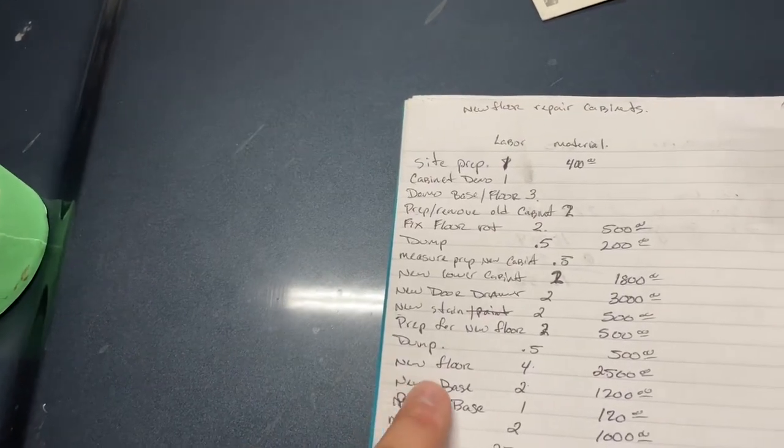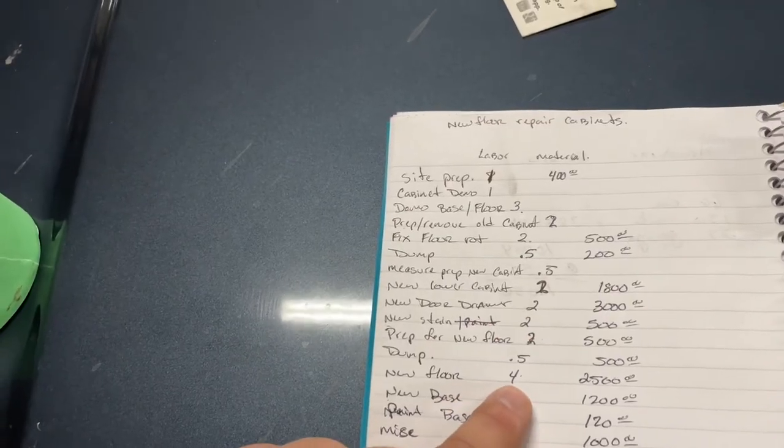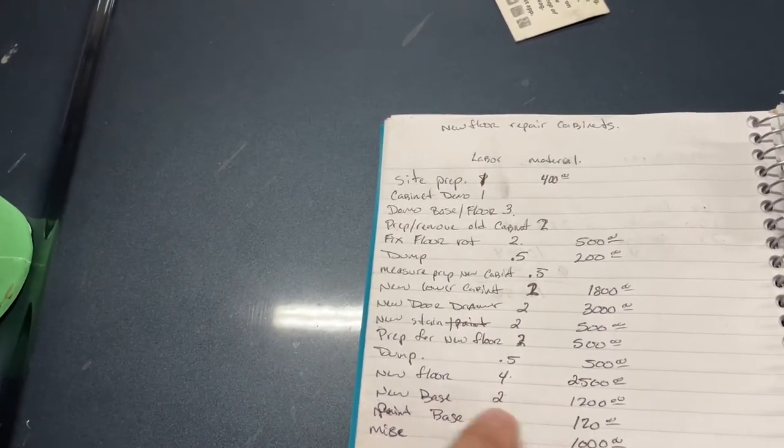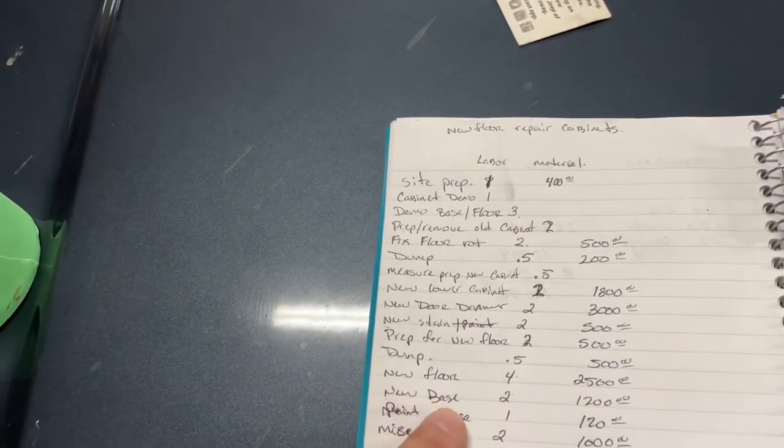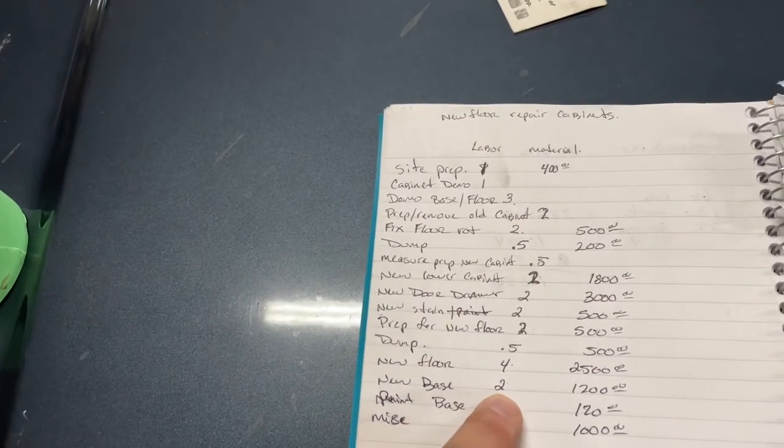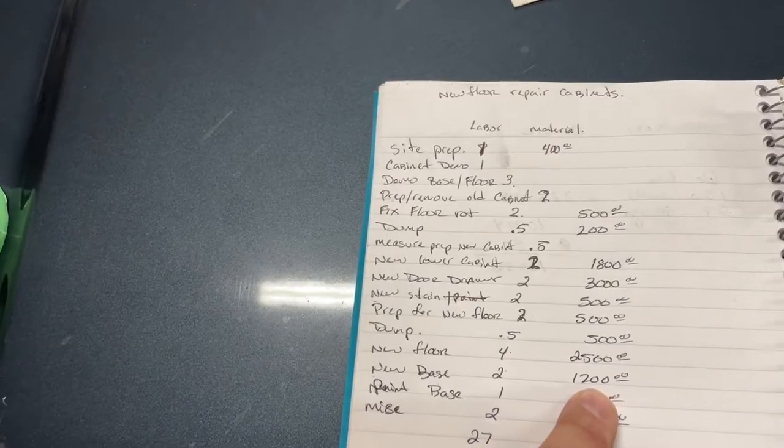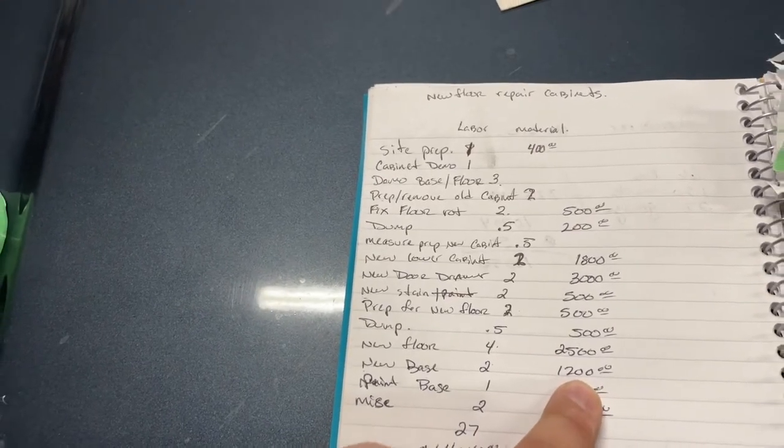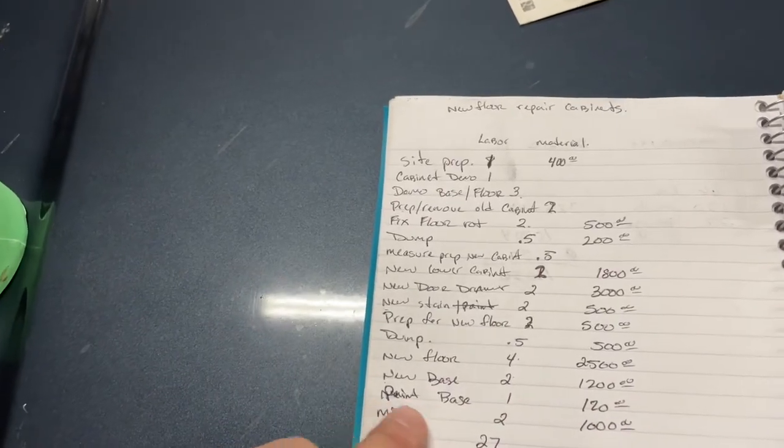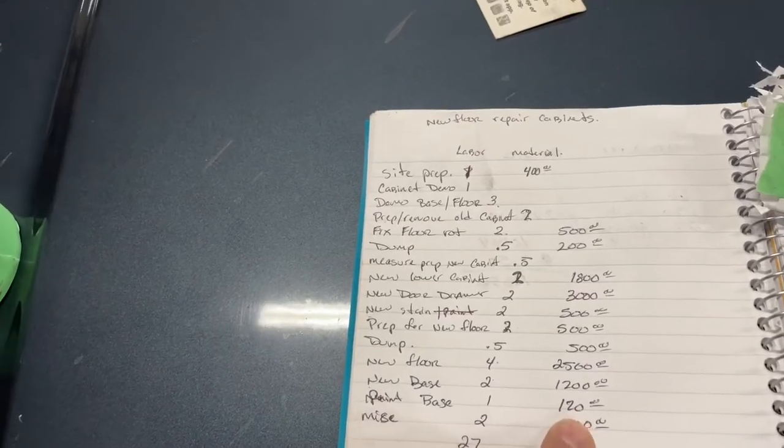We're going to start laying down the new floor, about four man days and about $2,500 of material. New base trim, two guys, one day or two days for one guy, about $1,200. This is a stain grade base. So it's going to be pretty expensive. To stain the base about $120, one guy.